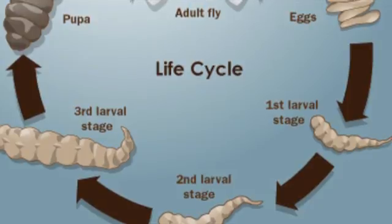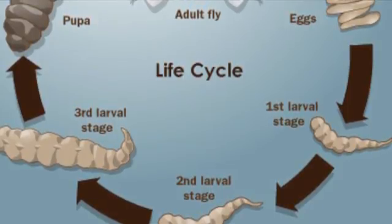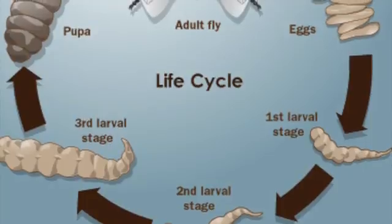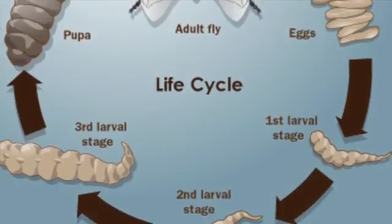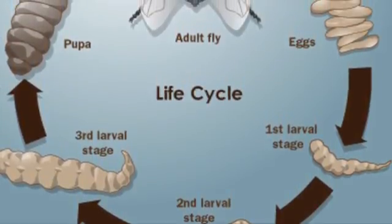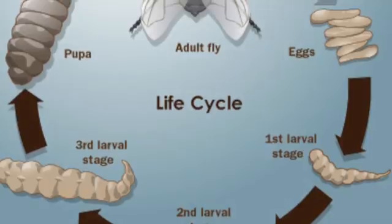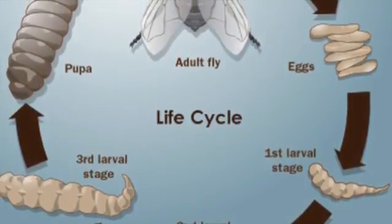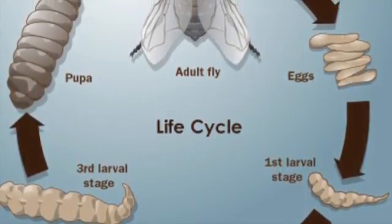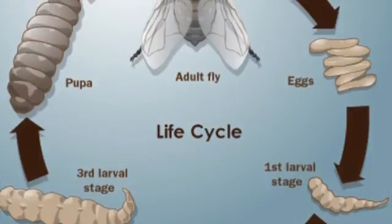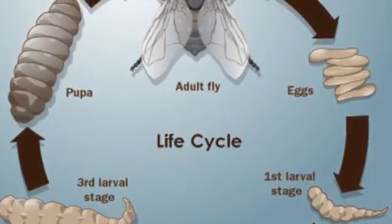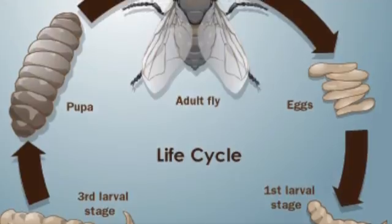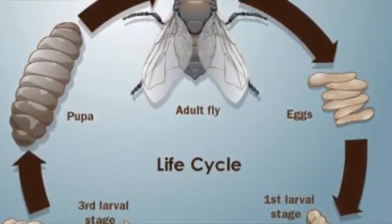The whole order of Diptera share the trait of holometabolous, or complete metamorphosis. The life cycle of a housefly is about 15 to 30 days. Eggs hatch within a day into larvae or maggots. The eggs look like white grains of rice and females can lay up to 500 of these in her lifetime. The maggots feed for 3 to 5 days, then pupate and emerge as adults in 3 to 6 days.